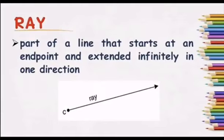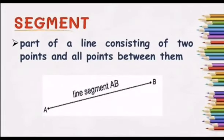Another defined term is ray. A ray is a part of a line that starts at an endpoint and extends indefinitely or infinitely in one direction. And then, we also have a segment. A segment is a part of a line consisting of two points and all points between them. The following example is line segment AB.